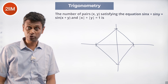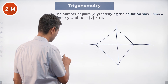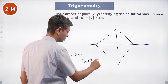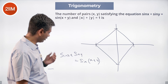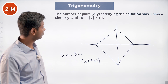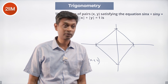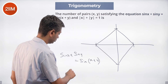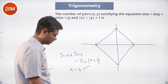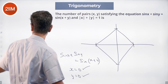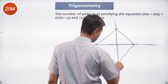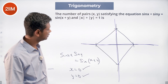Now, sine x plus sine y equal to sine of x plus y. To think about that, we use the same approach. Put x equal to 0: sine 0 is 0, so sine y equals sine y — that always works. So x equal to 0 works, meaning the entire y-axis satisfies the equation. Put y equal to 0: any value of x works. So the entire x-axis also satisfies sine x plus sine y equal to sine of x plus y.